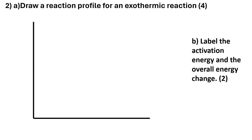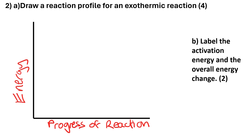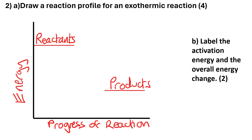Question 2: draw a reaction profile for an exothermic reaction. First, label the axes — energy up the side and progress of reaction along the bottom, meaning as time goes on. Because it's an exothermic reaction, the energy level of the reactants must be above the energy level of the products, as energy is given out to the surroundings. Draw the curve going up first, then dropping down to the level of the products.